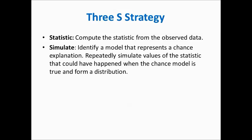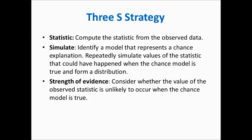Let's summarize what we have done using our 3S strategy. We first computed the statistic from the observed data. This was our difference in proportions of .467. Then we identified a model that represents the chance explanation. This was obtained by shuffling and dealing the 13 improver cards and the 17 non-improver cards. In doing so, we repeatedly simulated values of the statistic that could have happened if the chance model was true. And these simulated statistics formed our null distribution. Finally, we found that an observed statistic of .467 was way out in the tail of the null distribution, and was unlikely to occur if the chance model was true. Thus, we had strong evidence against the null.